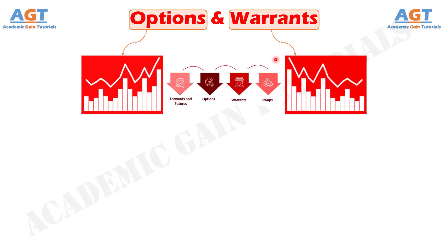Options and warrants are two derivatives traded in the exchange that give an option to the investor to buy the stock at a predetermined price and date. The basic difference between options and warrants is that while options are contracts, warrants are financial instruments.